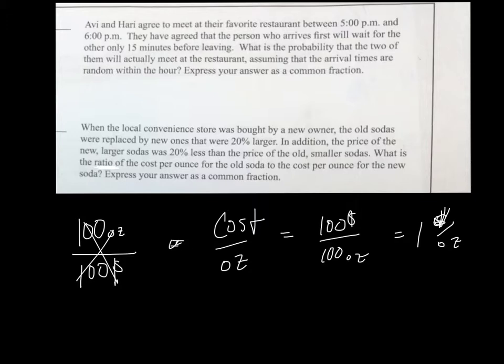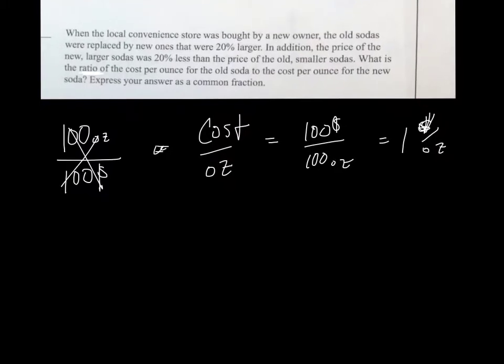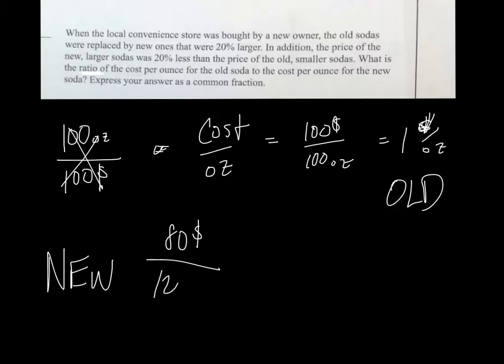So the old cost per ounce is one. The new cost per ounce - what do the new sodas cost? The new sodas cost eighty dollars. How big are they? 120 ounces. So eighty dollars over a hundred and twenty ounces is two-thirds dollars per ounce.